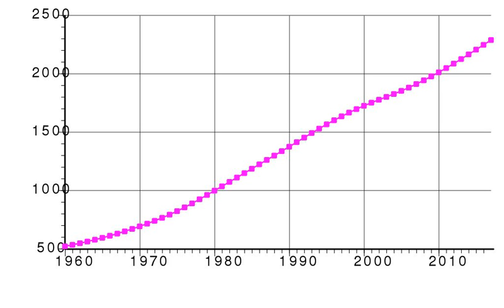Sex ratio — at birth: 1.03 males per female; under 15 years: 1.04 males per female; 15–64 years: 1.02 males per female; 65 years and over: 0.68 males per female; total population: 1.01 males per female.